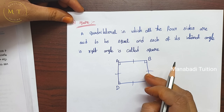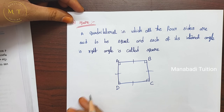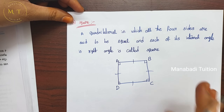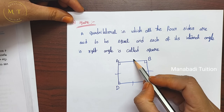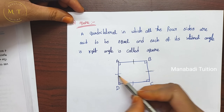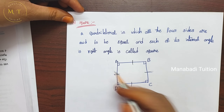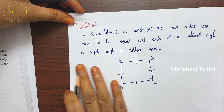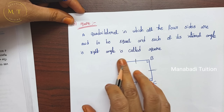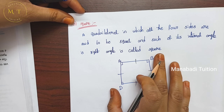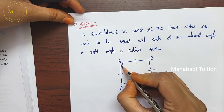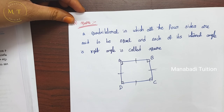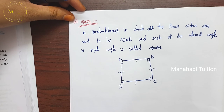Square: a quadrilateral in which all four sides are equal and each of its internal angles is a right angle is called a square.